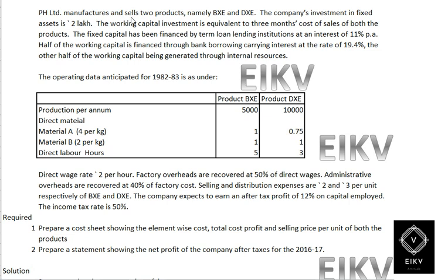Welcome to AKV. This is Vishnu. In this illustration, PH Limited manufactures and sells two products: BXE and DXE. The company invests in fixed assets worth 2 lakhs. The working capital investment is equivalent to 3 months cost of sales of both products. The fixed capital has been financed by a term loan from a lending institution.